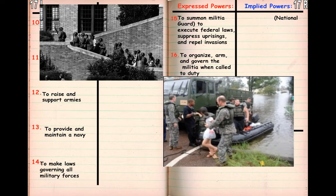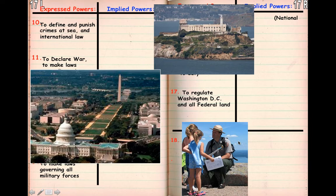Congress is also able to summon a militia — the National Guard is our version of a militia. They are allowed to organize, arm, and govern said militia when called up to duty in certain situations. This is a picture from the Little Rock 9, and this is a picture from Hurricane Katrina where the National Guard was called up for search and rescues. The next power is to regulate Washington D.C. and all federal land — like Alcatraz, the Washington Mall, and park rangers managing national parks.